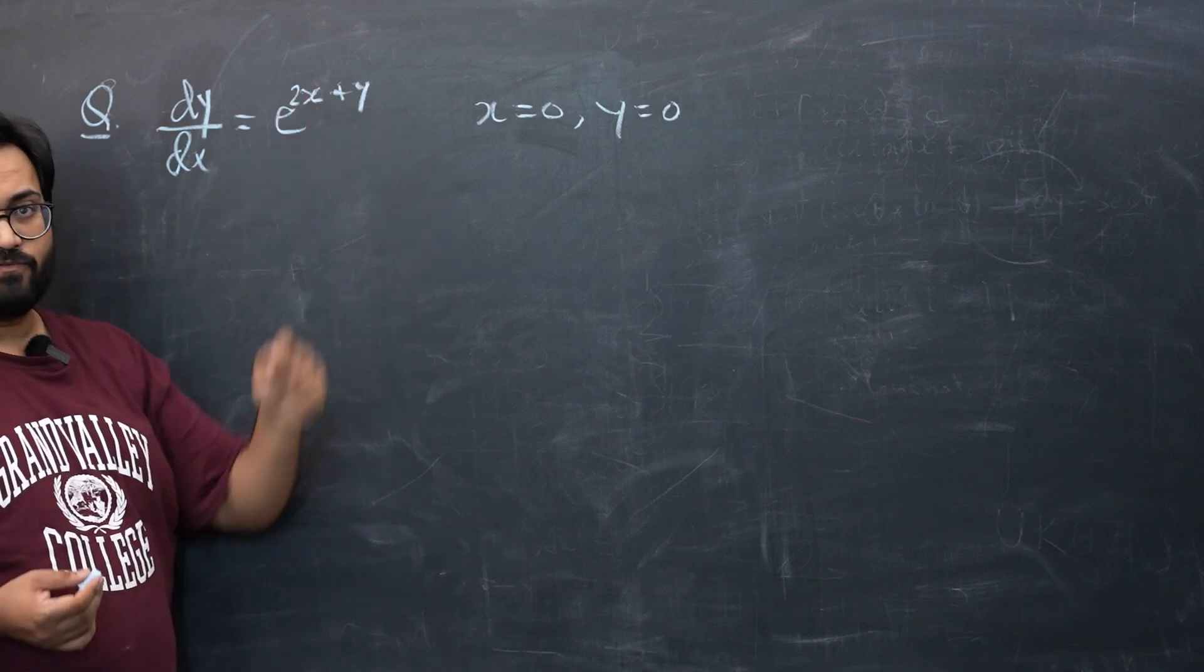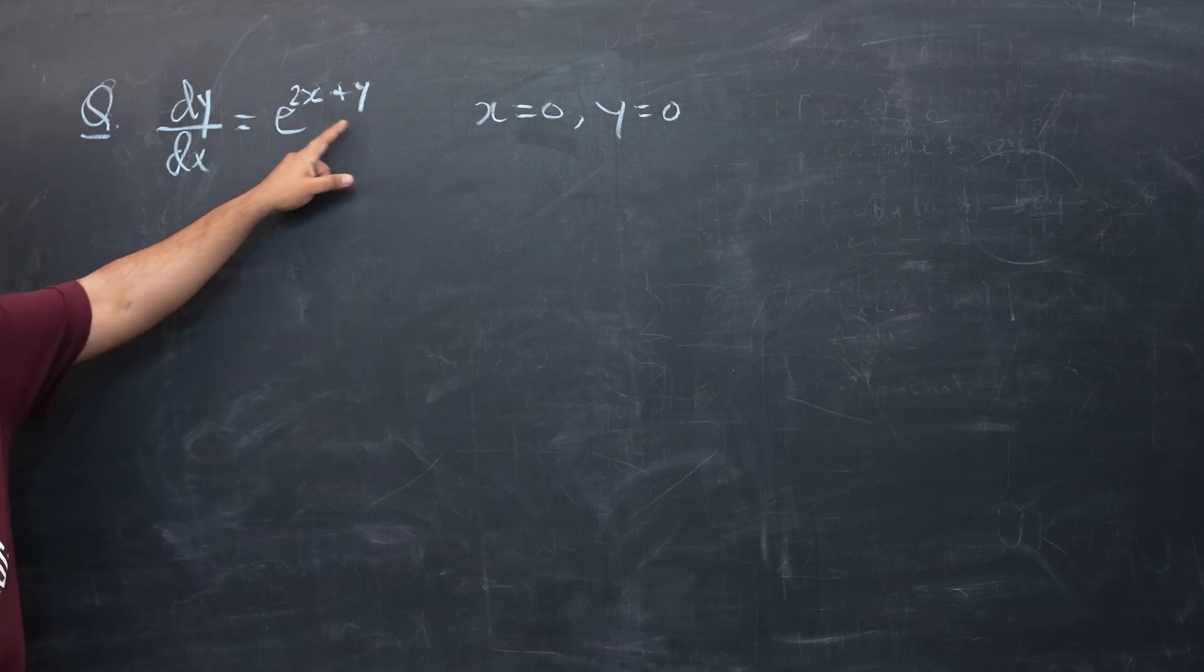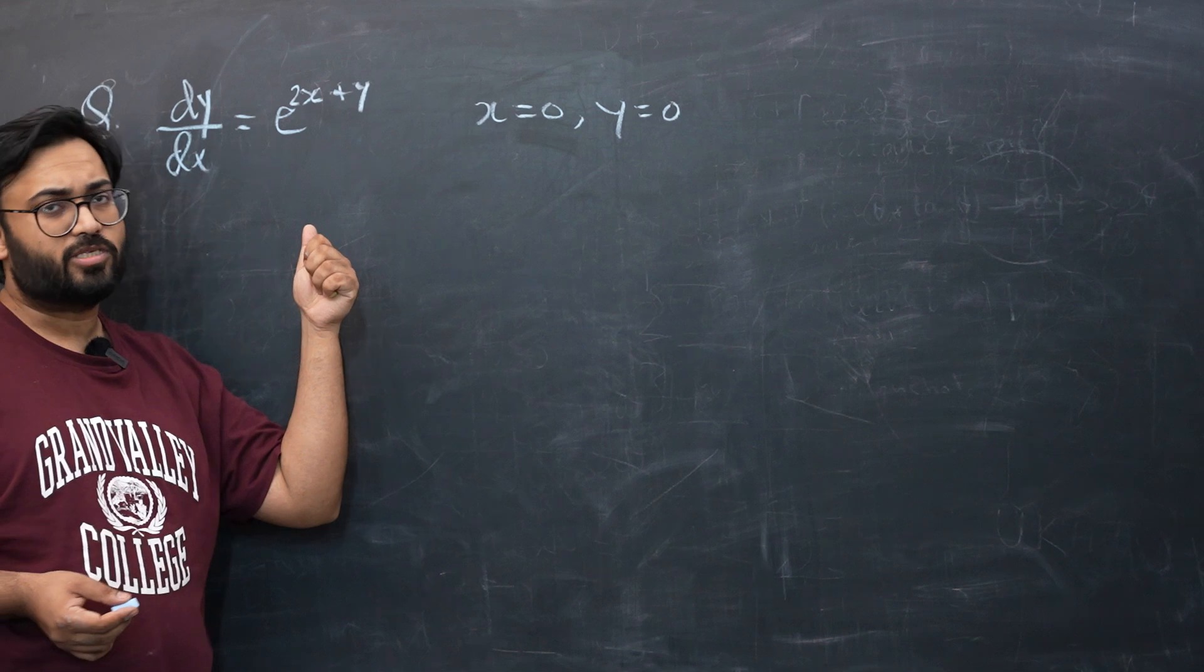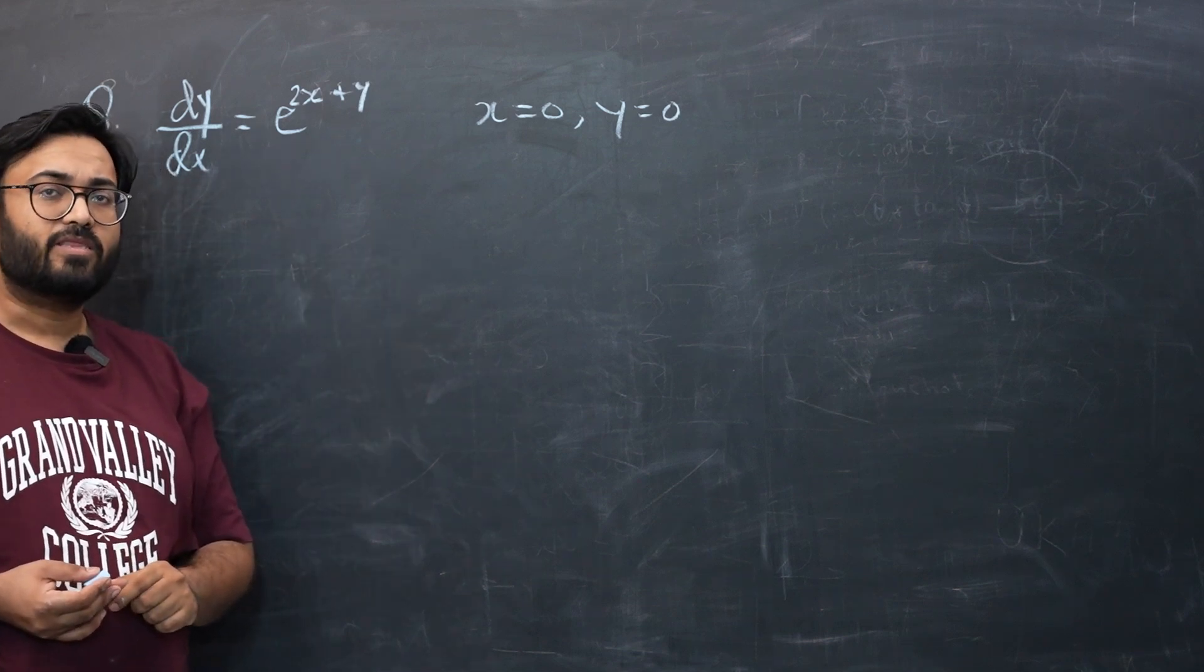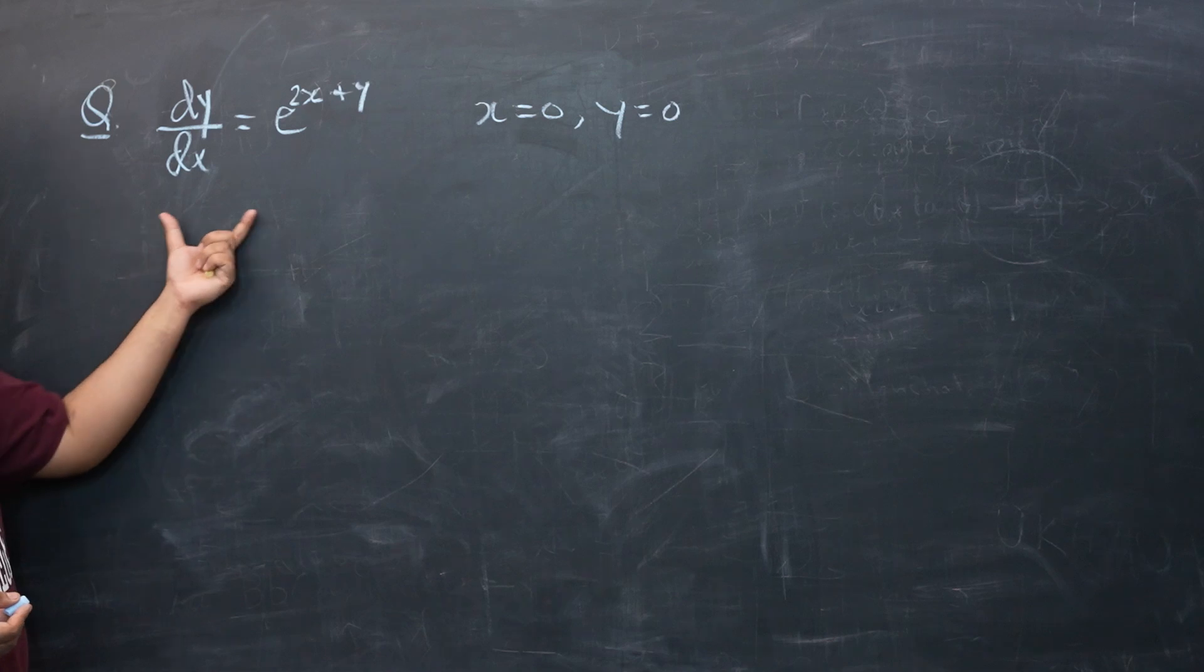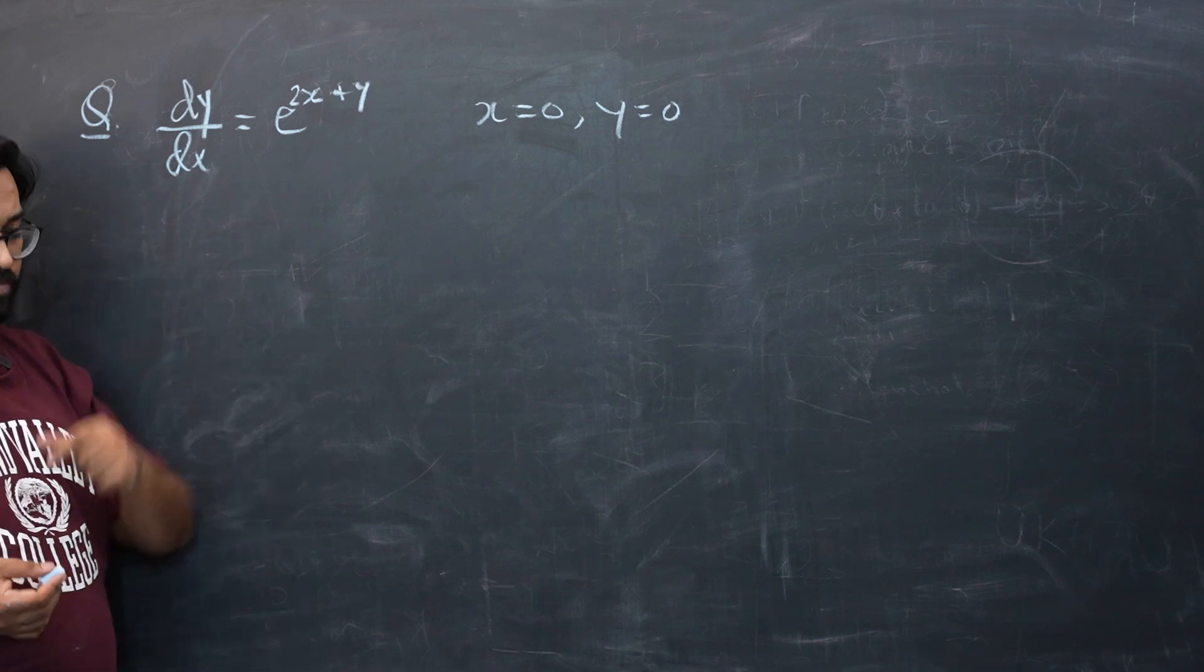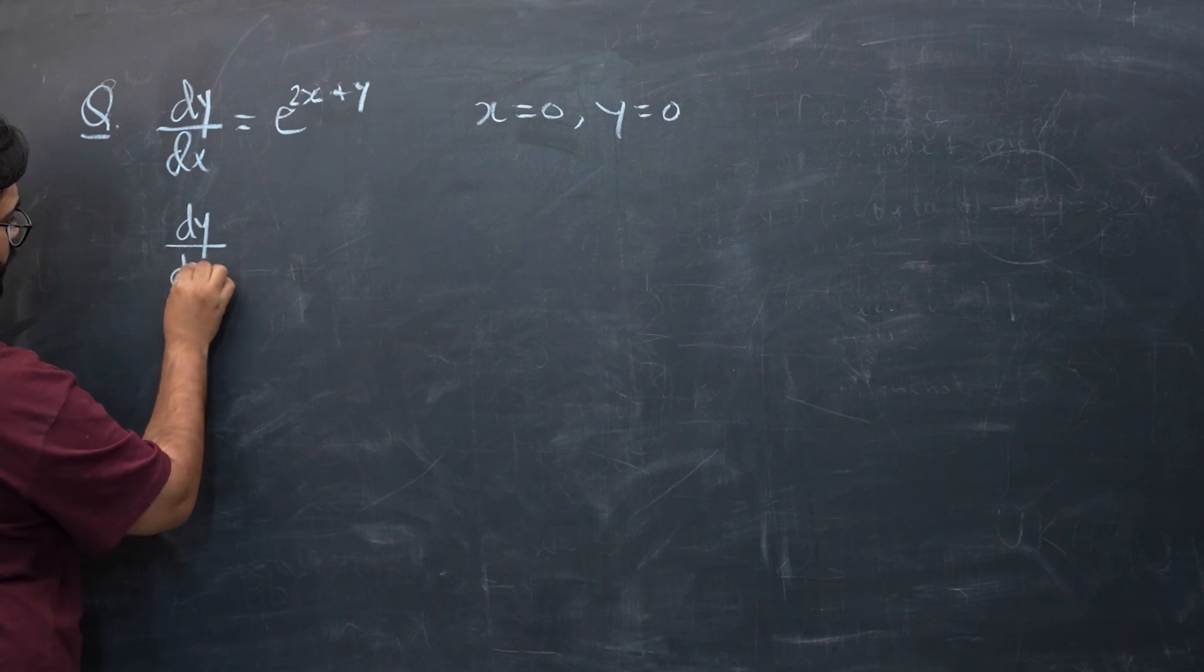They only have one term for x and y and students usually get confused in how to separate x and y over here. So I would really suggest that you guys pause the video over here and try to think of a way how you're going to separate the values for x and y. For those of you who have been able to do that, congratulations very nice. And for those of you who are struggling a little bit, let me show you how to do that.